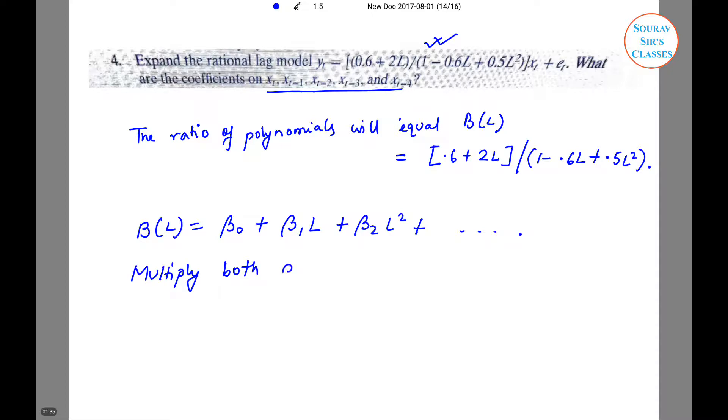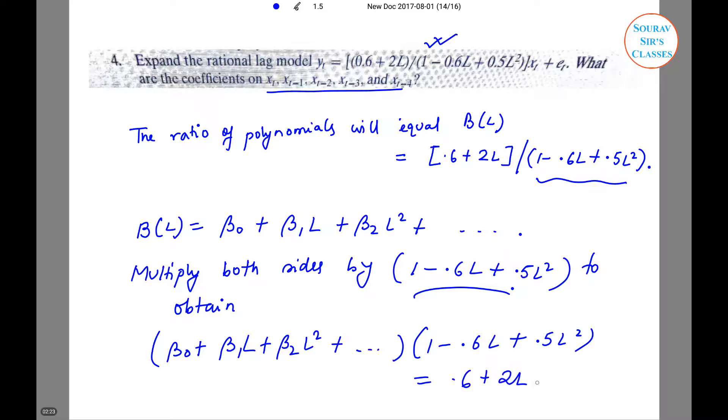Now if we multiply both sides by 1 minus 0.6L plus 0.5L square, which is nothing but the denominator, to obtain this. So you have something like L plus B2 L square into 1 minus 0.6L plus 0.5L square is equal to 0.6L plus 2L.